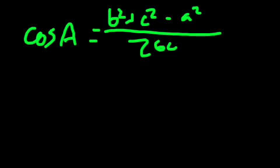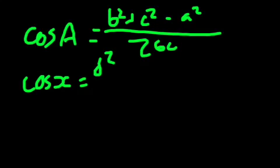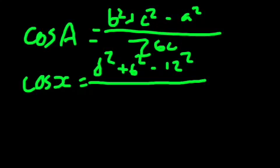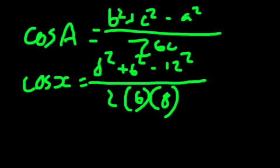So cos x is equal to 8 squared plus 6 squared minus 12 squared, all over 2, 6, 8.